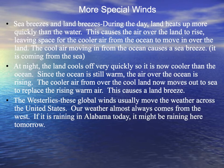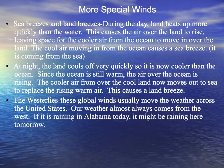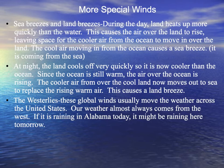Sea breezes and land breezes are something we may be familiar with but just don't realize it. Earlier I mentioned the difference in heating and cooling of land and water — how land heats up and cools off quicker than water. During the day, land heats up more quickly than the water. This causes the air over the land to rise, leaving space for the cooler air from the ocean to move in over the land. The cool air moving in from the ocean causes a sea breeze. At night, the land cools off very quickly so it's now cooler than the ocean. Since the ocean is still warm, the air over the ocean is rising. The cooler air from the land now moves out to sea to replace the rising warm air, and this causes a land breeze.